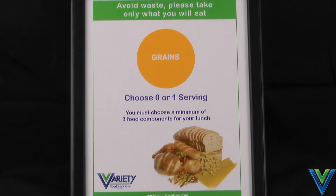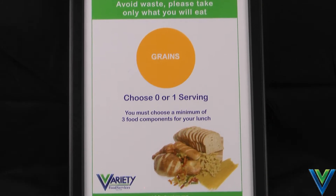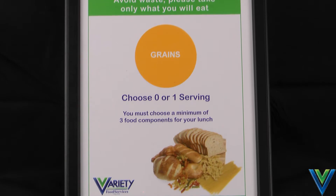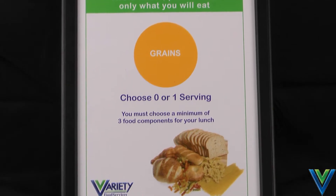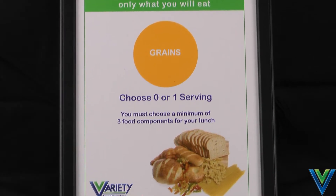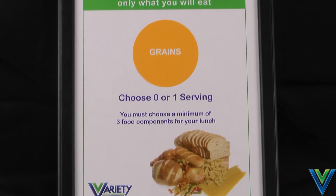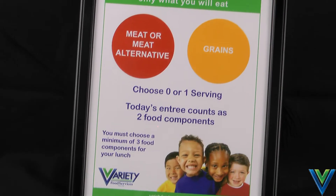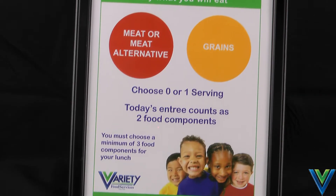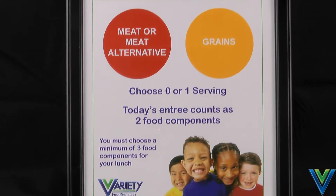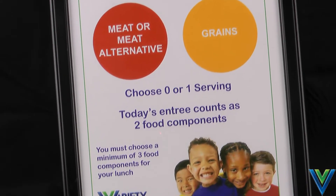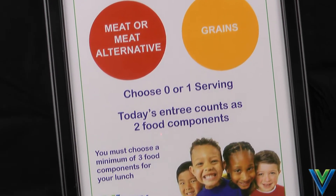Second are the grains and breads, which must be 51% whole grain beginning the 2012-2013 school year. Often the meat and grains components are combined in the entree, such as hamburger and bun, spaghetti and meat sauce, etc. In these cases, the entree item counts as two components.